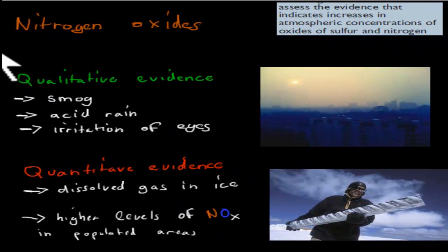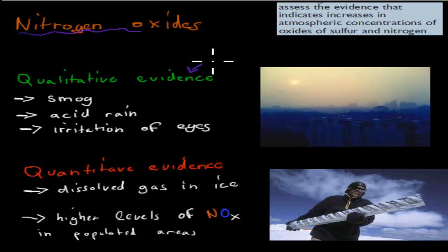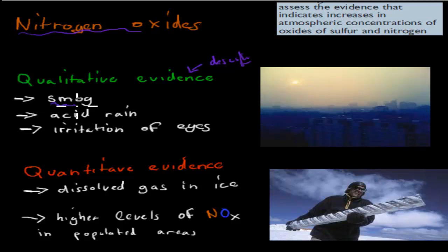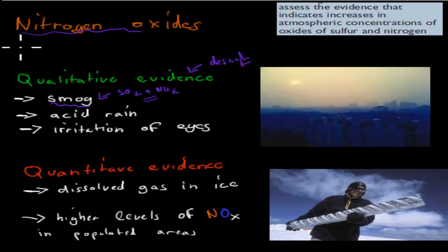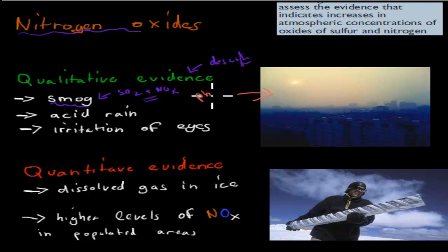I'll start with nitrogen oxides, and first the qualitative — the descriptive — evidence. We know that smog is caused by pollutants. For example, SO₂ and the oxides of nitrogen cause photochemical smog. We know that areas that have lots of cars and other sources that release nitrogen oxides also have lots of photochemical smog.